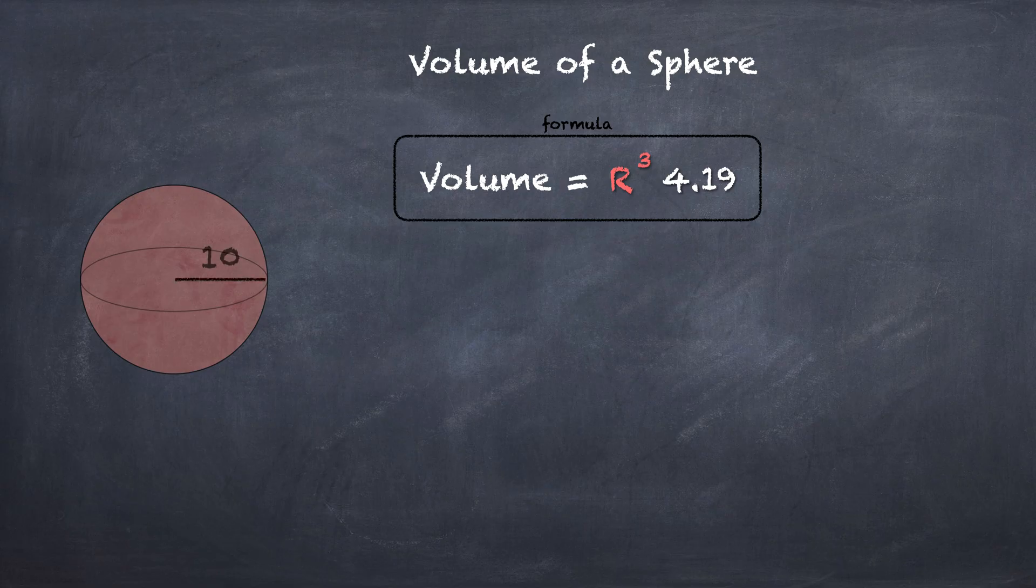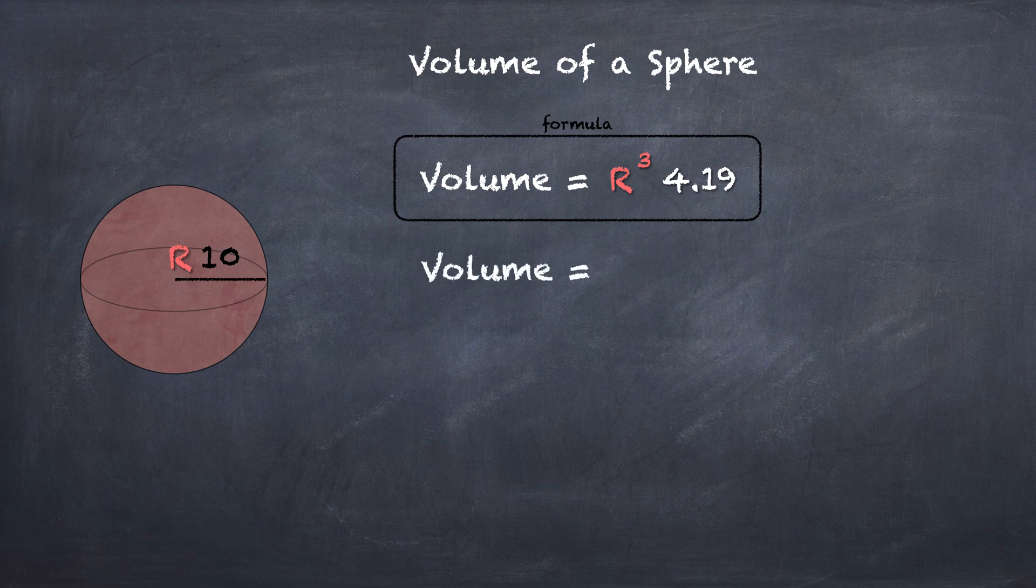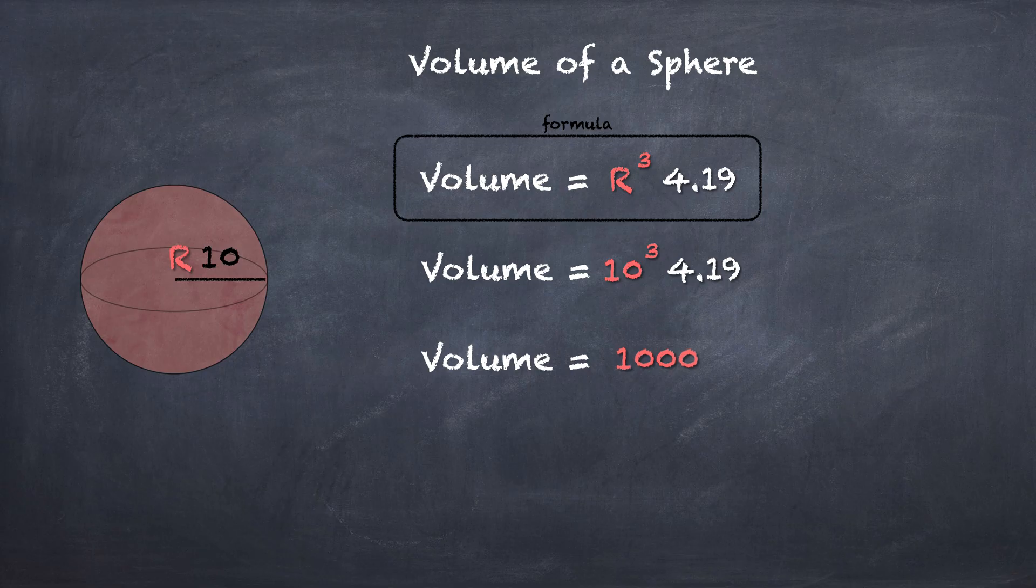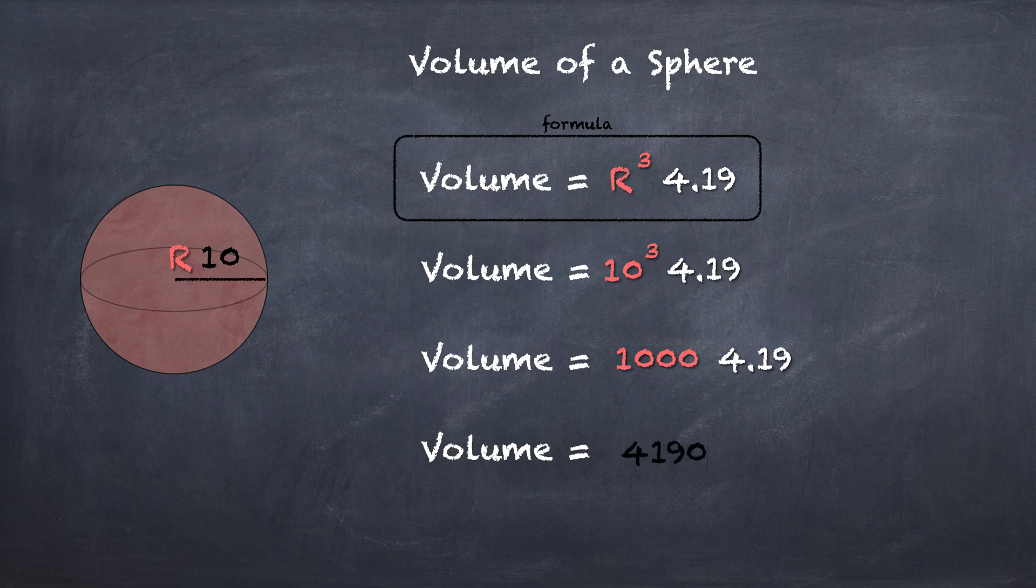Let's solve it with a number. As you can see, 10 is R. Now we just plug in. If 10 is R, 10³ is what we plug in times 4.19. 10³ is 1,000 times 4.19. And 1,000 times 4.19 is 4,190 units cubed.